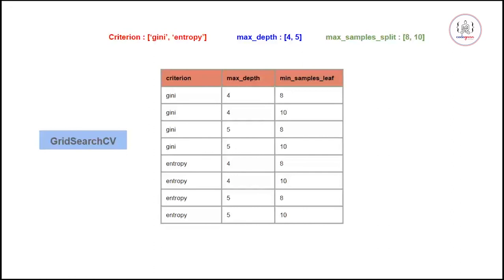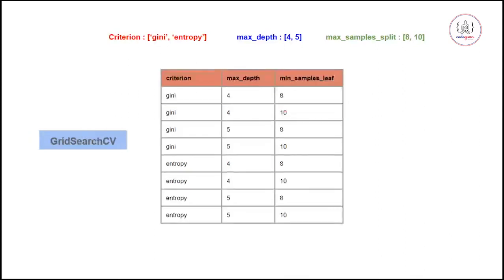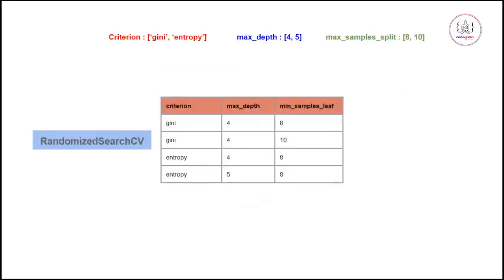In Grid Search CV, it writes out all combinations of the given parameters, builds every combination, and gives you the optimal parameters for your model. It also performs cross validation as well.